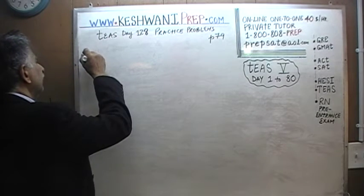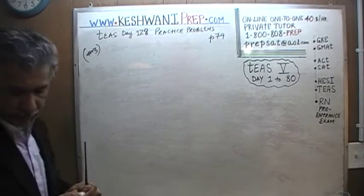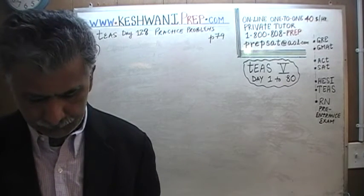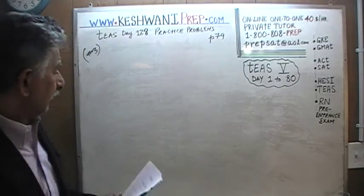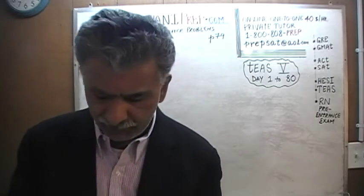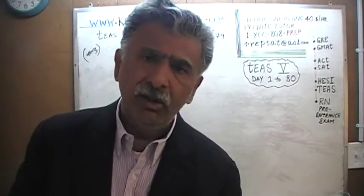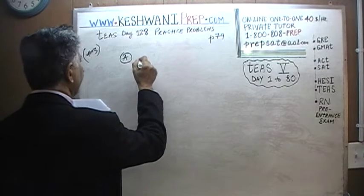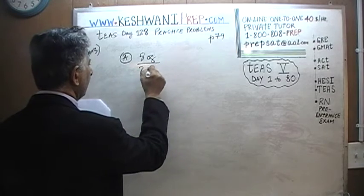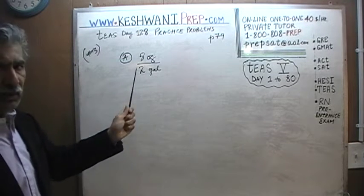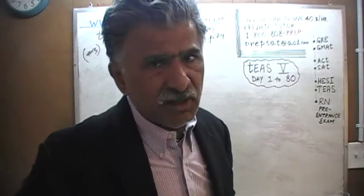We will do problem number 3. It is a strange kind of question. It says find the matching pairs of rates and unit rates — they are giving us some rates and our job is to match those rates with the unit rates. Choice A says eight ounce per two gallon. It is not a unit rate because at the bottom we don't have one, we have two. That's not how we express a rate — it has to be so many ounces per gallon, per one gallon.